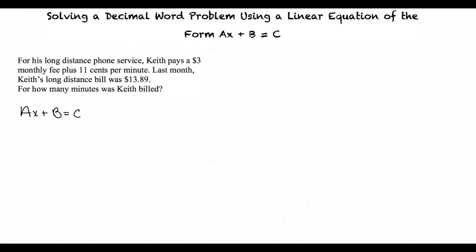Which means our equation is going to look like this. It's $0.11 for every minute used, minutes being represented by the variable m, plus an initial fee of $3,